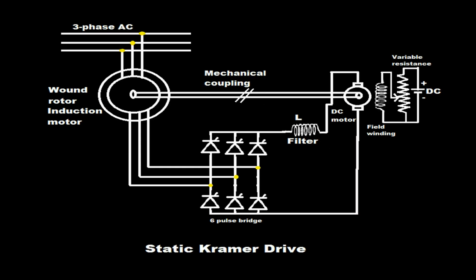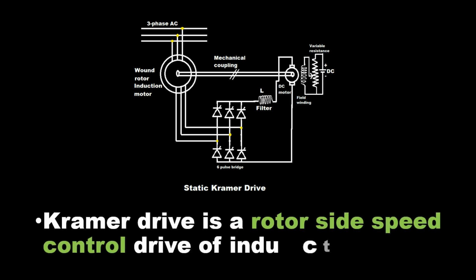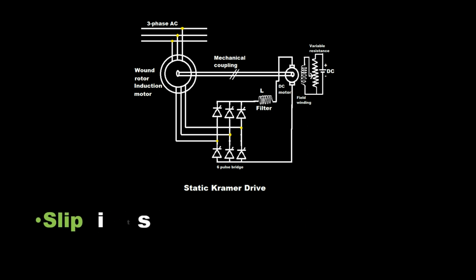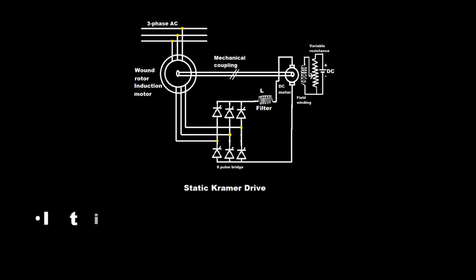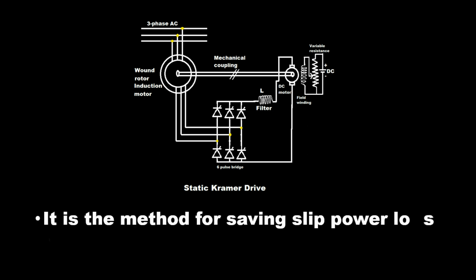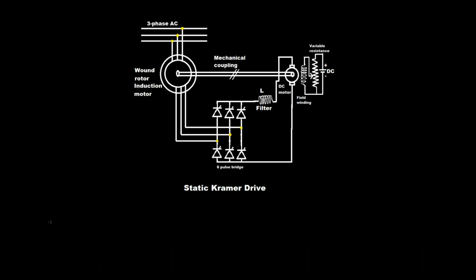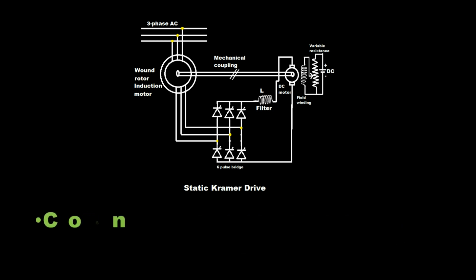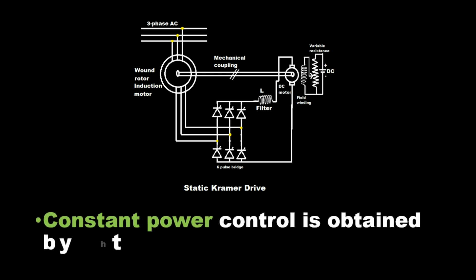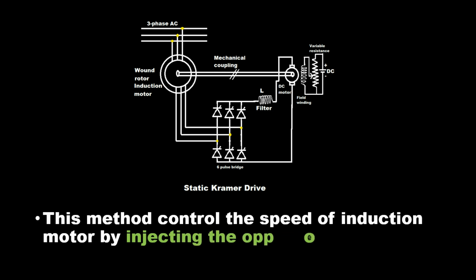The Static Kramer Drive is a rotor side speed control drive of an induction motor. Slip is the difference between synchronous speed and rotor speed. It is a method for saving slip power loss in the rotor by returning power back to the line. It converts the slip power into AC power and returns it back to the line. Constant power control is obtained by this method.